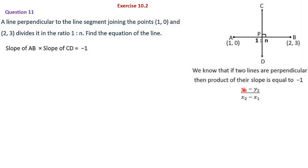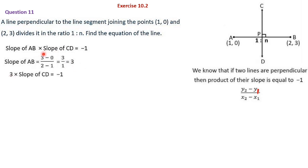Slope of AB we can calculate using the formula (y2 − y1)/(x2 − x1). Slope of AB = (3 − 0)/(2 − 1) = 3/1 = 3. So 3 into slope of CD = −1, which gives slope of CD = −1/3. Now, point P divides AB in the ratio 1:n. If we know the coordinates of P, we can find the equation of CD using the point-slope form.